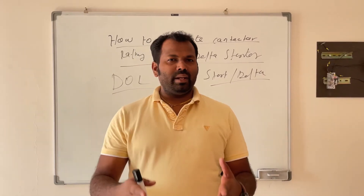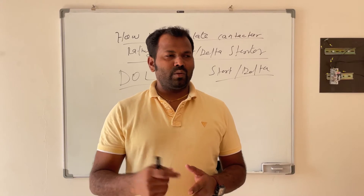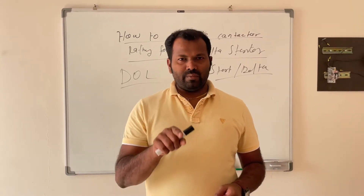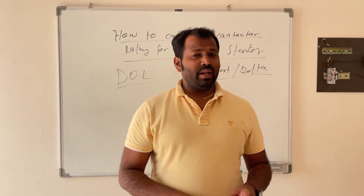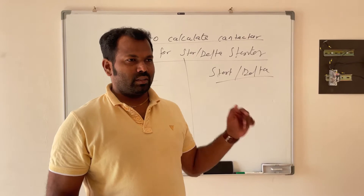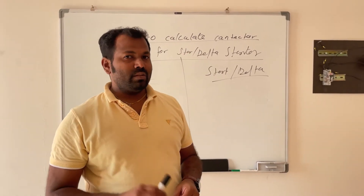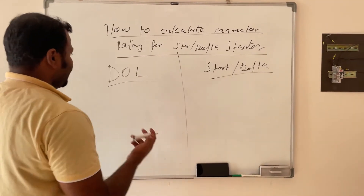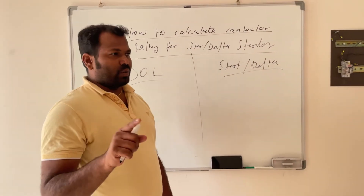It is recommended from 7.5 kilowatt onwards we can use a star-delta starter. Now we will see for 7.5 kilowatt: what is the contactor rating for a DOL starter, and what is the contactor rating for a star-delta starter, and how we can choose. We will see.